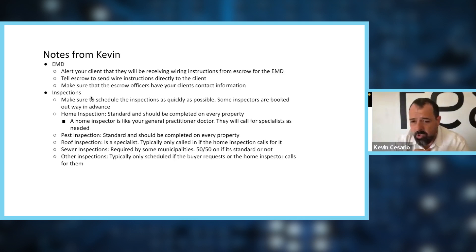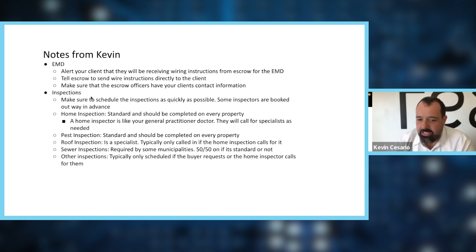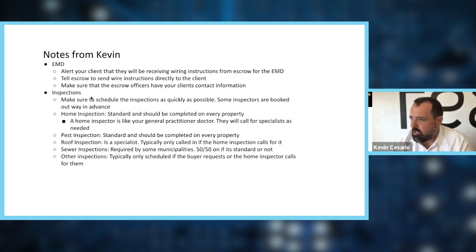Book inspections almost immediately, especially if you have a short contingency window. A home inspection is like the general practitioner doctor — they take an overall look and say healthy or not, but if they notice your eyes are wrong, they're not going to diagnose it; they'll send you to an eye specialist. That's how a lot of inspections work.